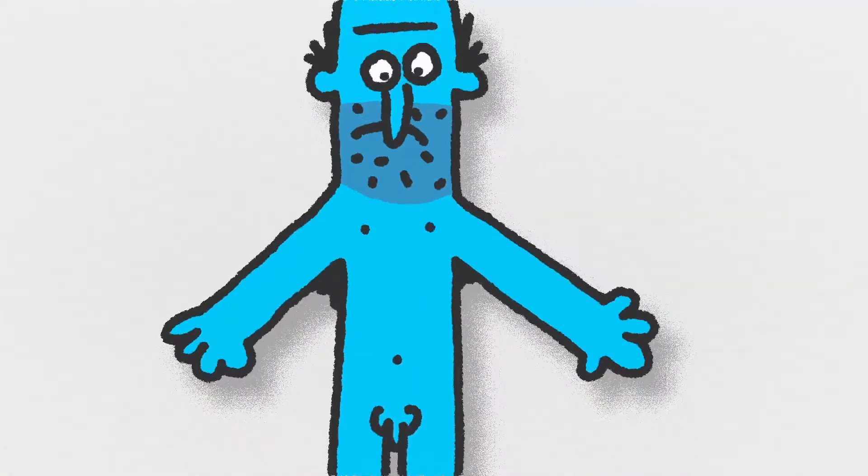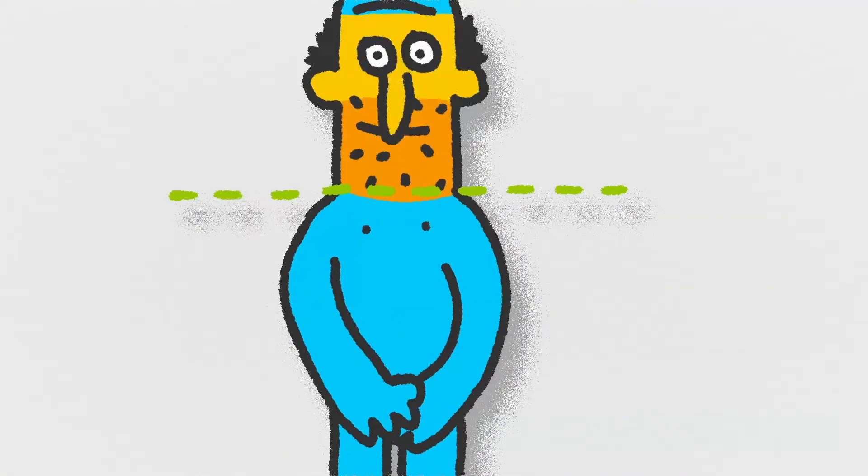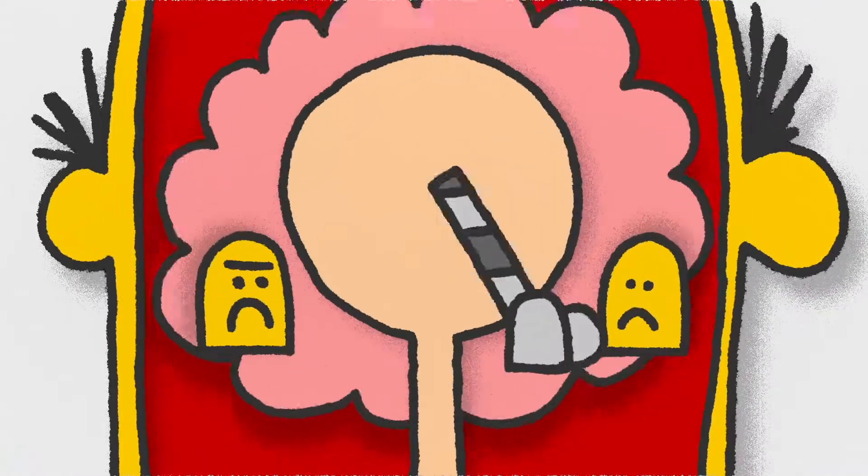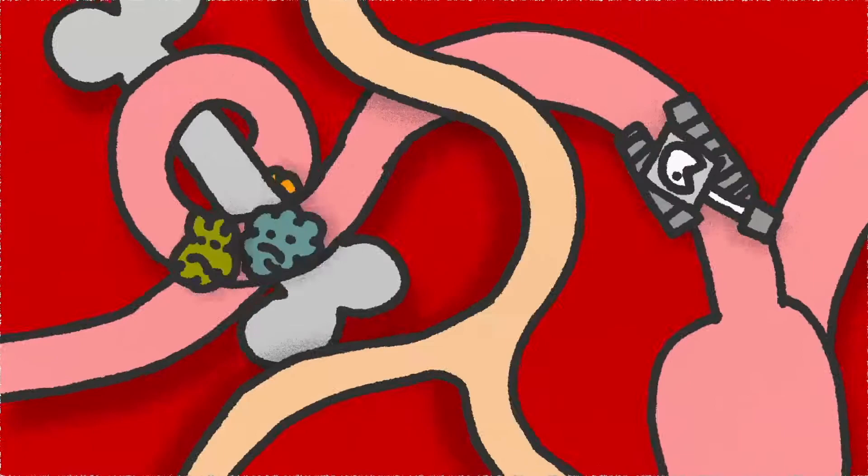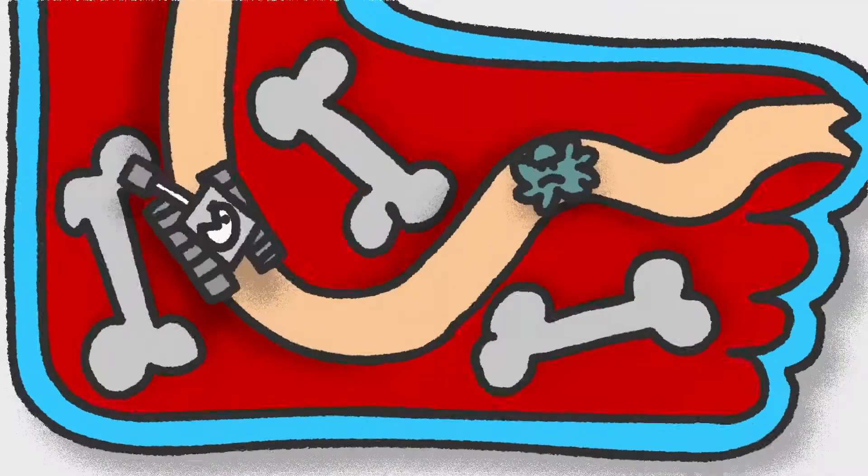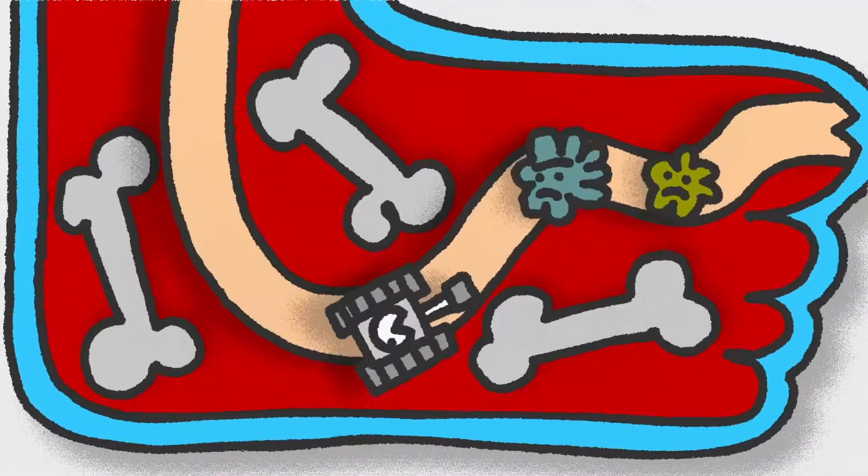For years it was accepted that there was a blood-brain barrier, a biological Berlin Wall which blocked any interaction between the brain and the immune cells and proteins circulating in the blood. Your brain was unaffected by the immune system dealing with an attack on the body.